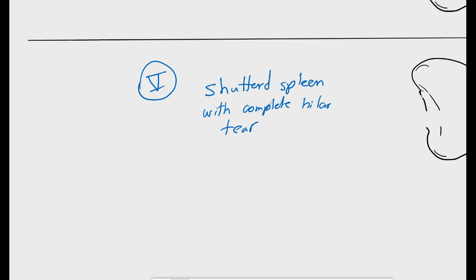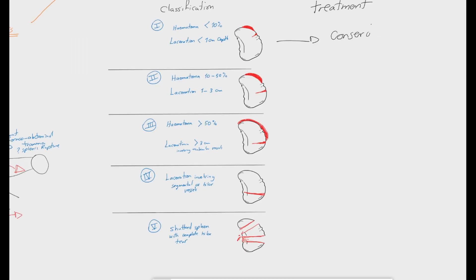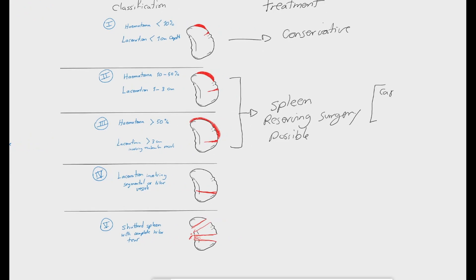A stage 1 injury can be treated conservatively in a hemodynamically stable patient. Stage 2 and 3 are candidates to spleen preserving surgeries, such as capsular sutures, surgical glue, mesh, or segmental resection. For severe forms like stage 4 and 5, the treatment of choice is splenectomy.